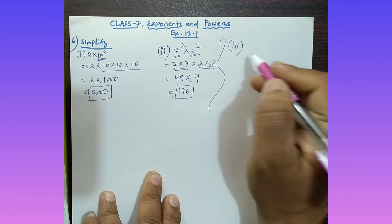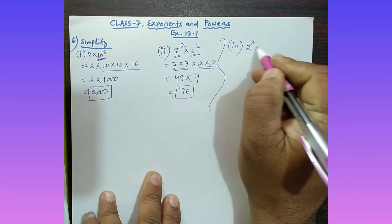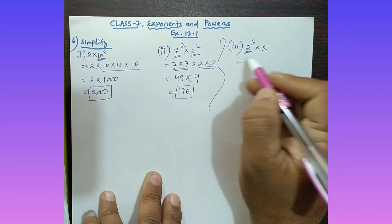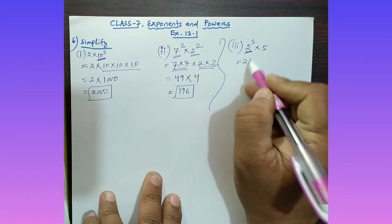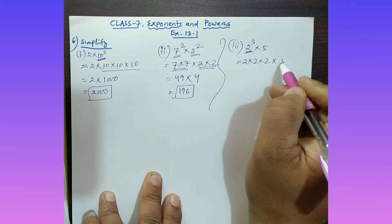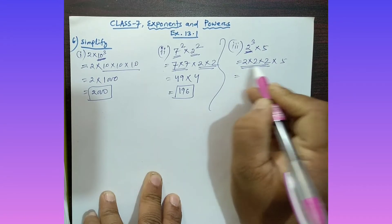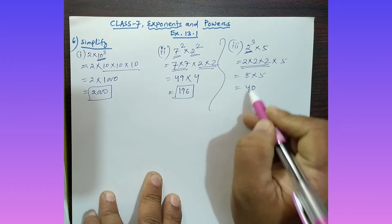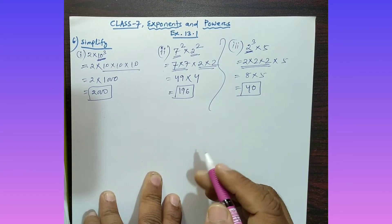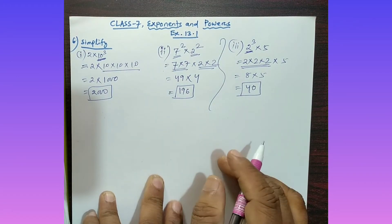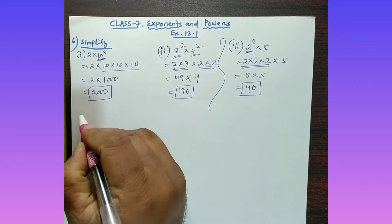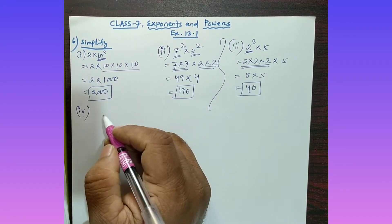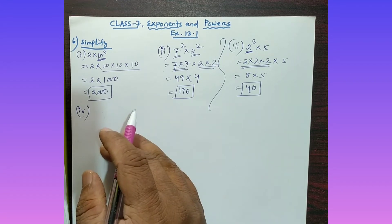Part (iii): Simplify 2 cube into 5. Two cubed means 2 is multiplied 3 times: 2 into 2 into 2, which is 8. Then multiply by 5, so the answer is 40.